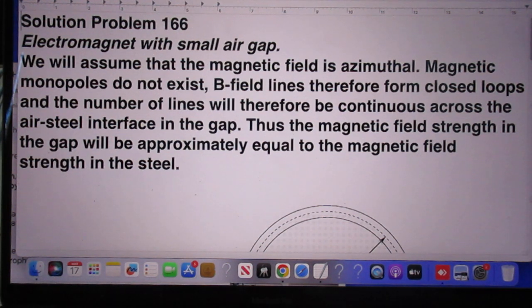We will assume that the magnetic field is azimuthal. Magnetic monopoles do not exist. B-field lines therefore form closed loops and the number of lines will therefore be continuous across the air-steel interface in the gap. Thus the magnetic field strength in the gap will be approximately equal to the magnetic field strength in the steel.